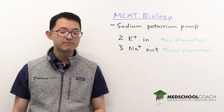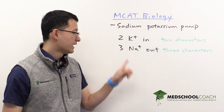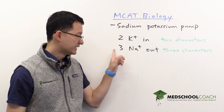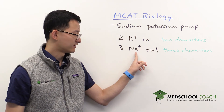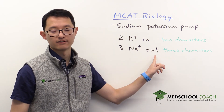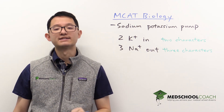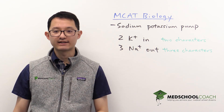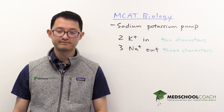Sodium is the same thing, but we're looking at three. NA+ has three characters, and OUT — O-U-T — has three characters. So you can remember that it is three sodium cations that go out of the cell.